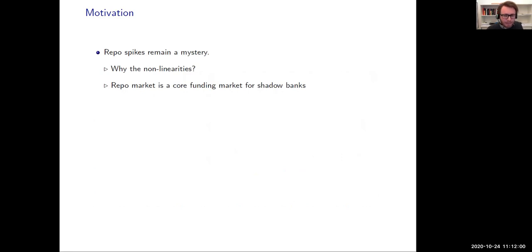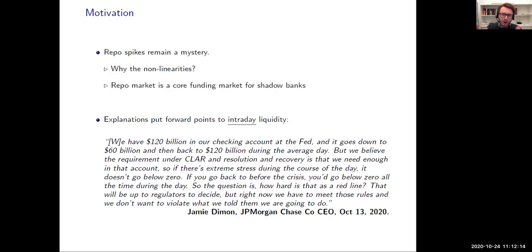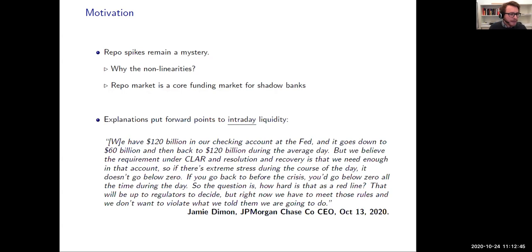Among the potential explanations put forward by many market participants is the notion that intraday liquidity suddenly started to matter due to recent changes in regulation. Someone, after the answer that Daryl quoted, insisted on understanding why JP Morgan did not lend more in September: 'We have $100 billion in our checking account at the Fed. It goes down to $60 billion and then back to $120 billion during the average day. But we believe the requirement under CLR and resolution and recovery is that we need enough in that account so that if there is extreme stress during the course of the day, it doesn't go below zero. If you go back to before the crisis, you would go below zero all the time during the day. Right now, we have to meet those rules and we don't want to violate what we told them we are going to do.'